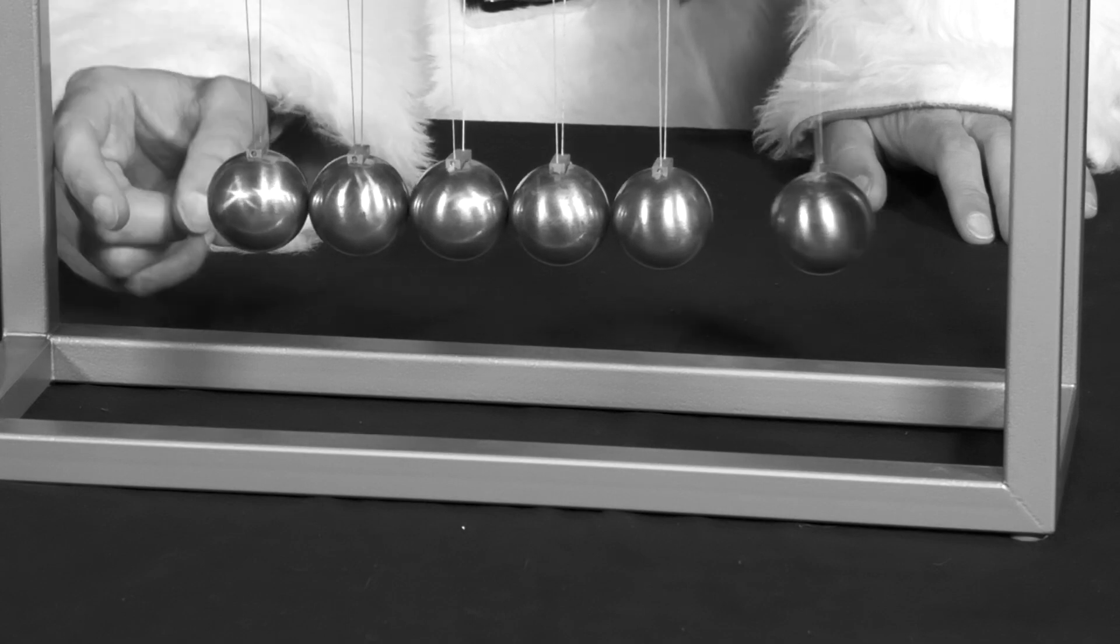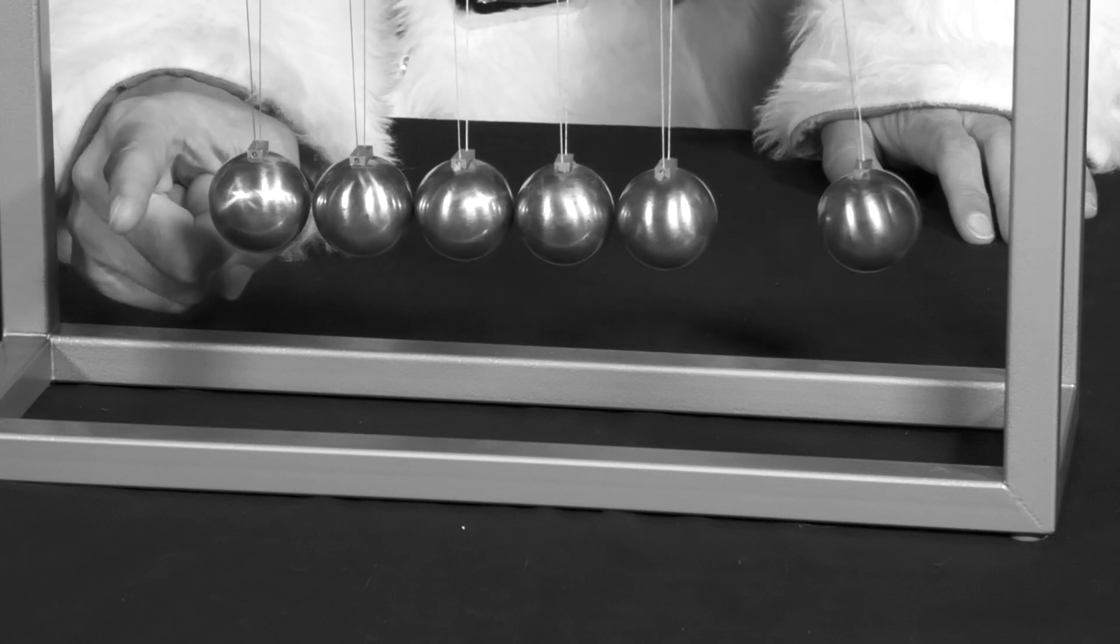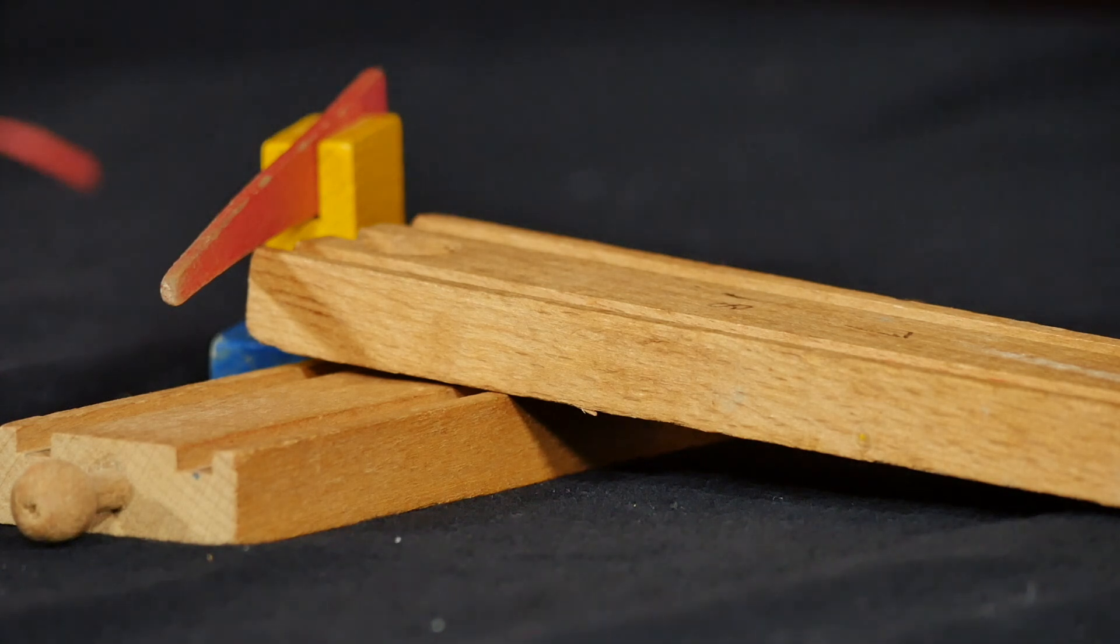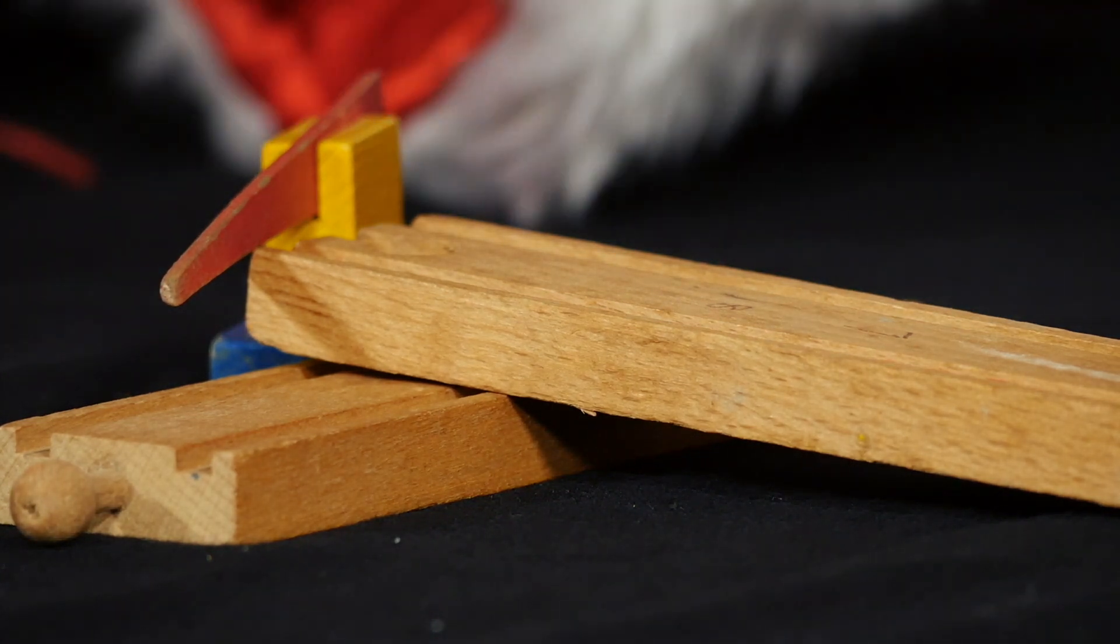He wants to do something similar with the wooden railway. He builds two straight pieces of track together, putting another small piece of track under the second one.